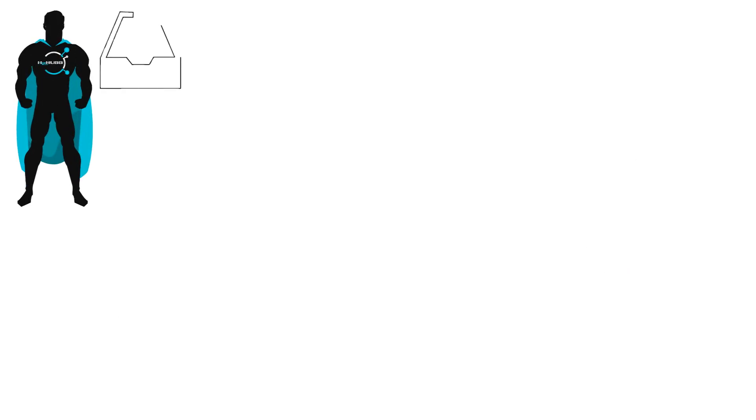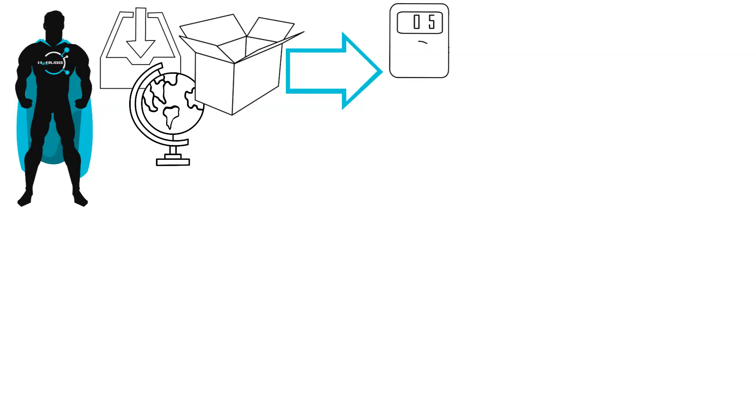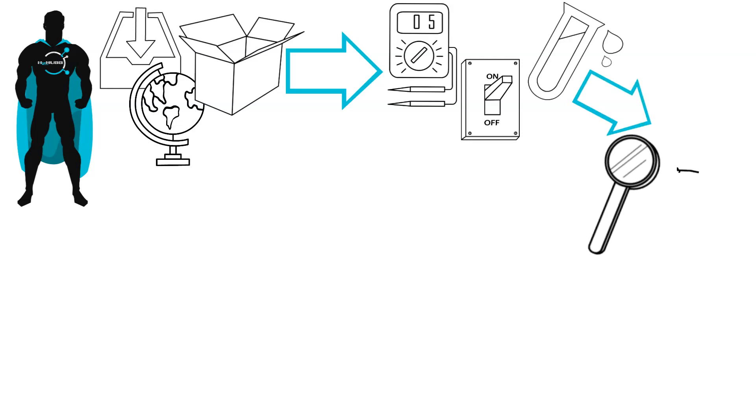First, the company will send us their product. We have received products from all over the world. Then the product will be put through a series of tests. We test for many things, but most importantly, we make sure the product will produce above the amount of hydrogen you will need for therapeutic benefits. This amount is based on what is found in the research to be therapeutic.